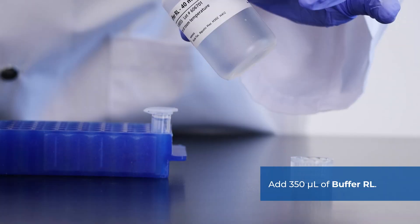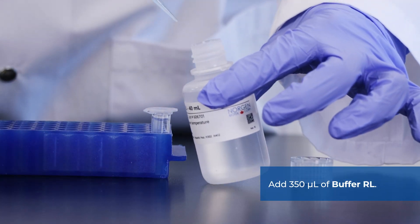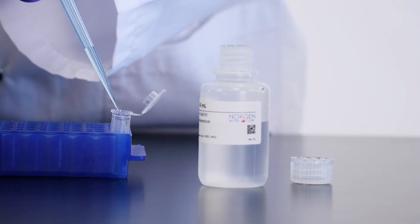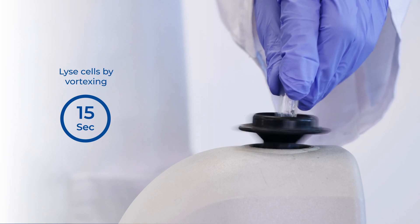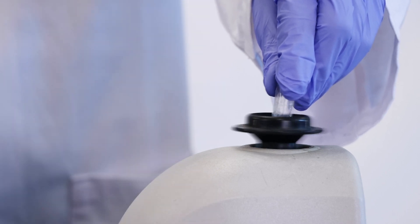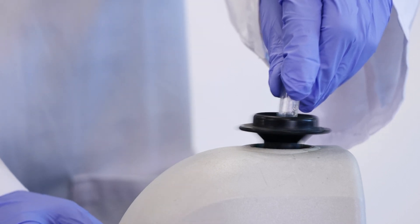Add 350 microliters of buffer RL. Lyse viral cells by vortexing for 15 seconds. Ensure that mixture becomes transparent before proceeding to the next step.